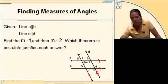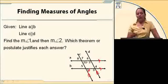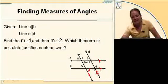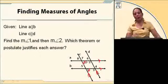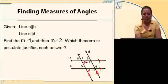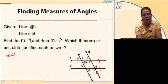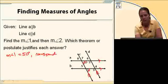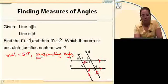Here's angle 1. I can see that the angle that corresponds with angle 1 is given to me as 50 degrees if I look at those two lines A and B, the parallel lines A and B. So I can say that the measure of angle 1 equals 50 degrees because corresponding angles are congruent.